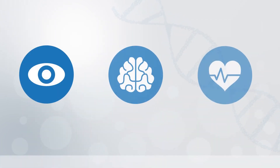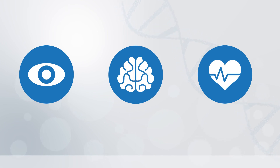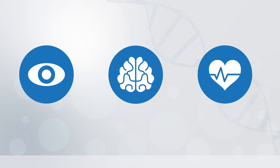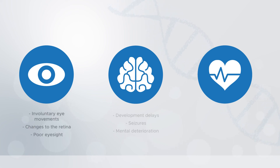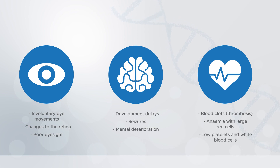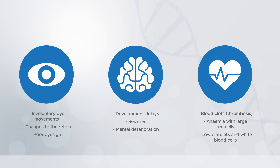The parts of the body most commonly affected by cobalamin C disease are the eyes, physical features, the brain and central nervous system, and blood vessels. Health problems typically include developmental problems, seizures, and mental deterioration; eye problems such as involuntary eye movements and changes to the retina; and blood problems such as anaemia or clots.